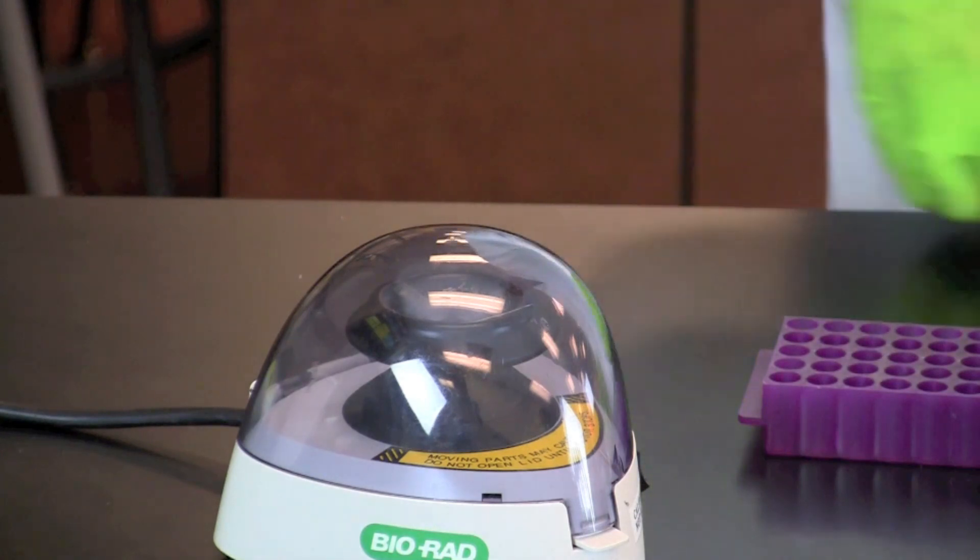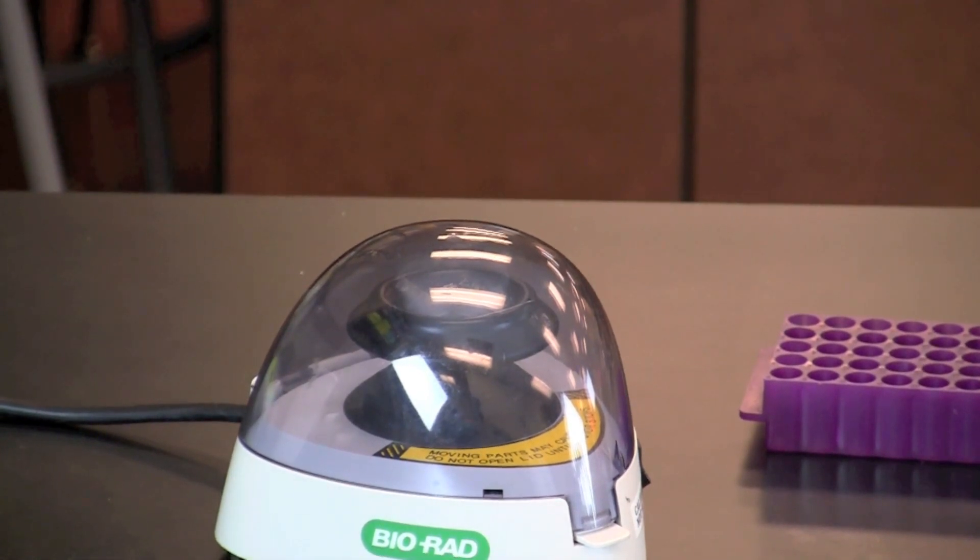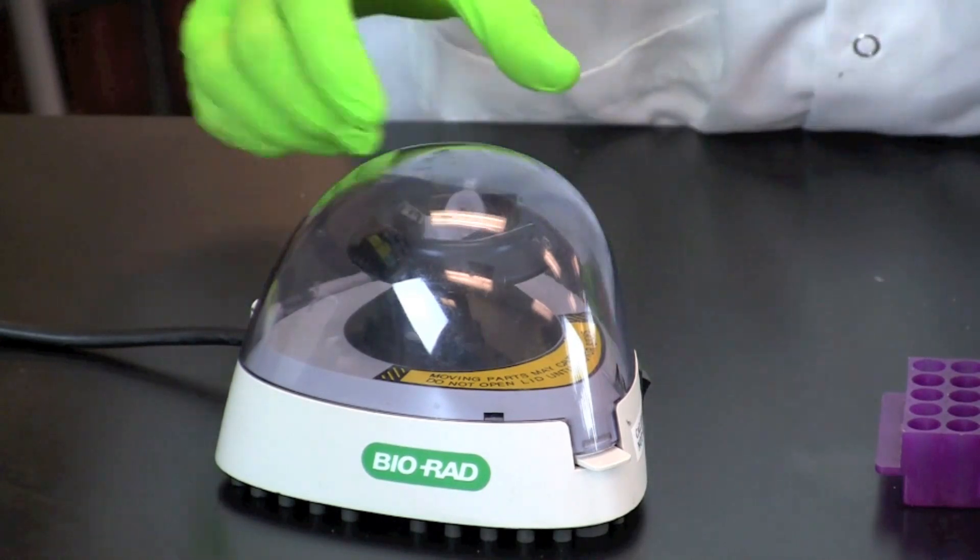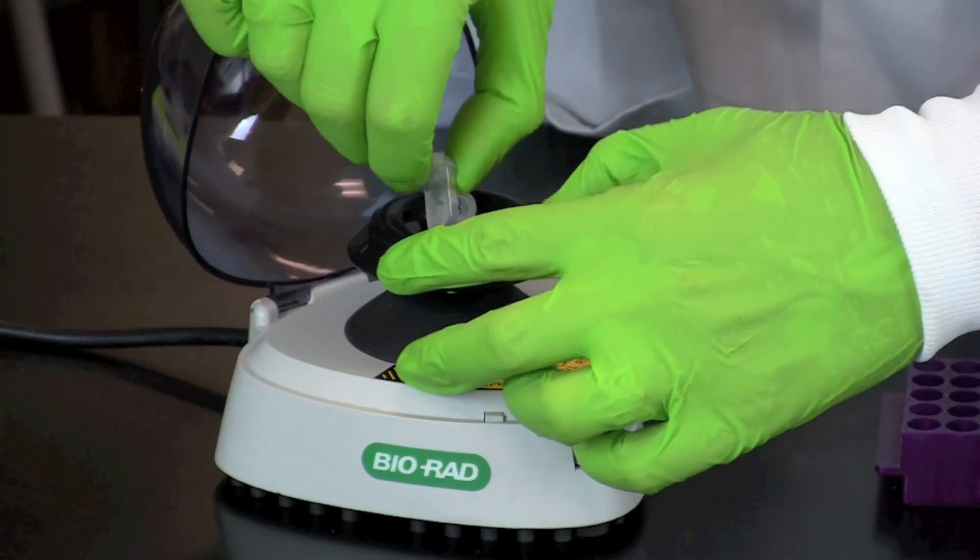Centrifuge at maximum speed for 2 minutes. If you are using a mini-centrifuge that can only reach 2,000 G's, centrifuge for 5 minutes. Locate the cell pellet. The pellet should be white and be the size of a match head.